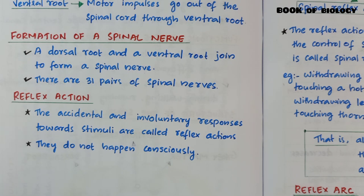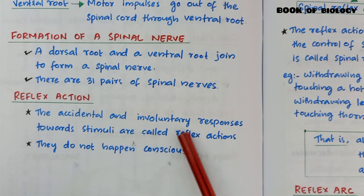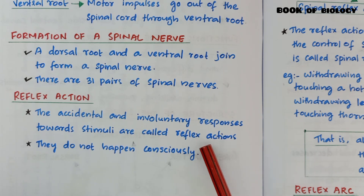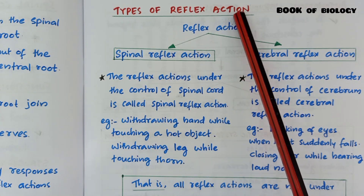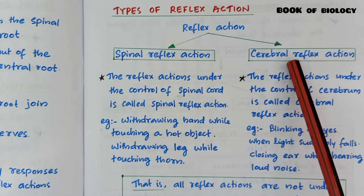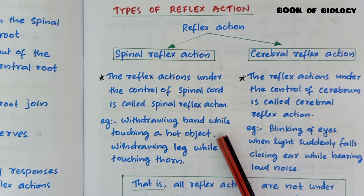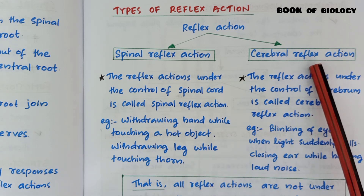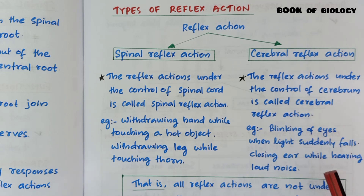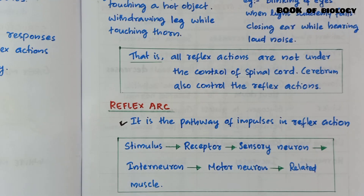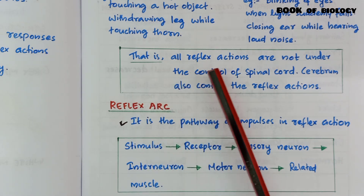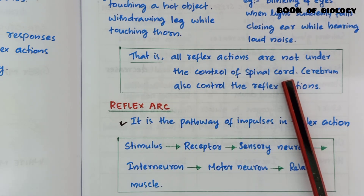Next topic: reflex action. The accidental and involuntary responses towards stimuli are called reflex actions — they do not happen consciously. Types: spinal reflex action and cerebral reflex action. Spinal reflex action is under the control of the spinal cord; examples — withdrawing hand while touching a hot object, withdrawing leg while touching a thorn. Cerebral reflex action is under the control of the cerebrum; examples — blinking of eyes when light suddenly falls, closing ear while hearing loud noise. Note that not all reflex actions are under the control of the spinal cord; the cerebrum also controls reflex actions.